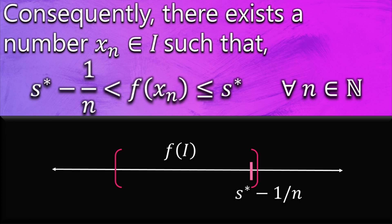Now you can see that there must be some element f(x_n) laying between s* - 1/n and s*, because F(I) is the set of real numbers and real numbers are so tightly packed. I hope you will never forget this part of the proof ever again.